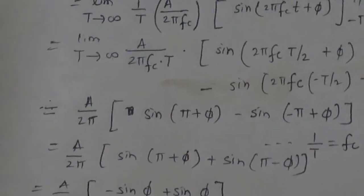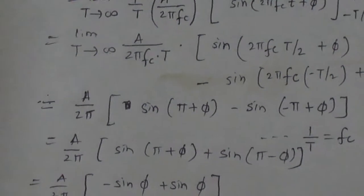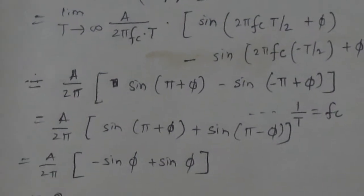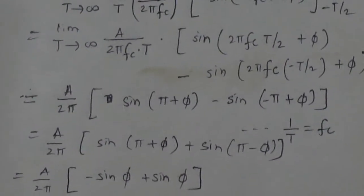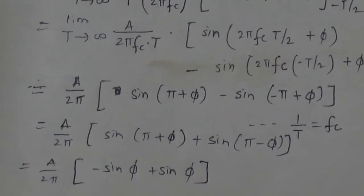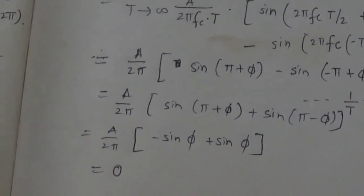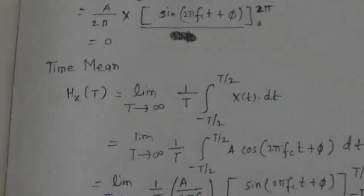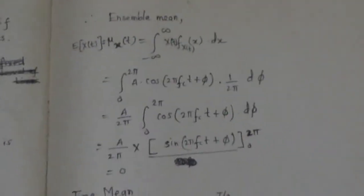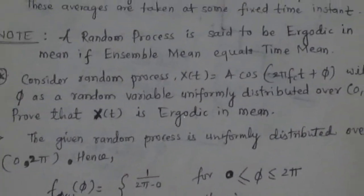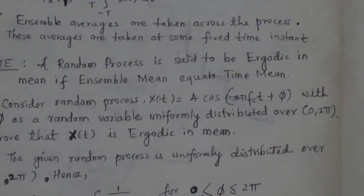We know that sin(π + φ) = −sin φ and sin(−π + φ) = +sin φ. So we get A/(2π) · (−sin φ + sin φ) = A/(2π) · 0 = 0. Therefore the time mean is equal to 0. The ensemble mean is also 0, so time mean equals ensemble mean. Both are 0, so we can say that the given process is ergodic in mean. In this way you can prove ergodicity in mean. Thank you for watching this video.